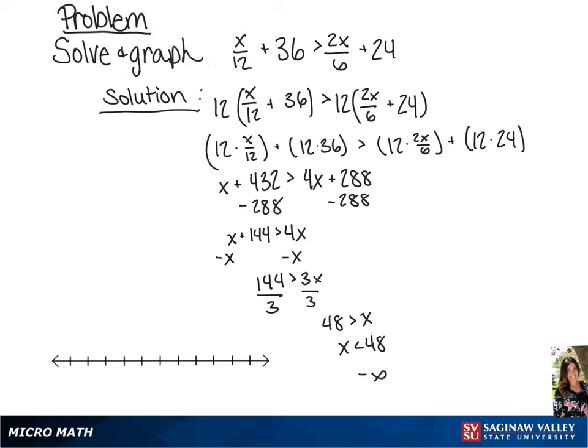In interval notation, we have negative infinity to positive 48. If we graph this on the number line, we're going to draw an open circle around 48 and an arrow to negative infinity or to the left.